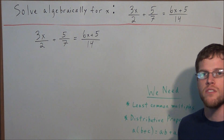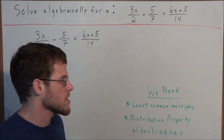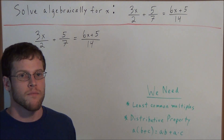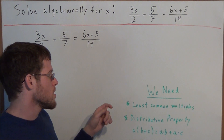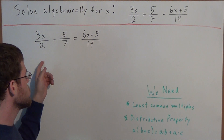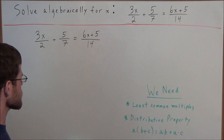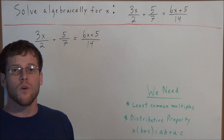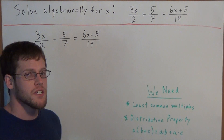From my experience working with students, I've noticed that they like solving problems like this by getting rid of each of the fractions. So we're going to use the concept of least common multiples to get rid of the 2, 7, and 14 in each of these denominators. So we need to ask ourselves: what is the least common multiple of 2, 7, and 14?